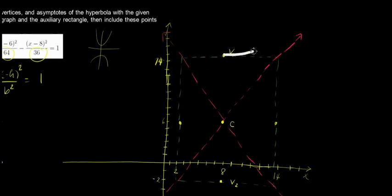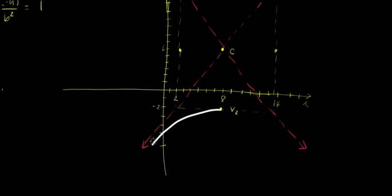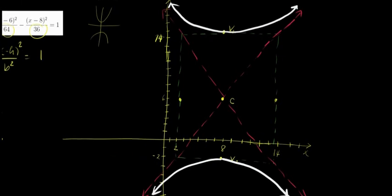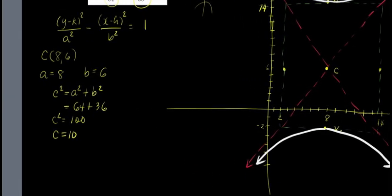Hindi pa natin dinradrawing yung hyperbola. So let's draw the hyperbola using the vertex and your asymptotes as the guides. So yung white lang - that's your hyperbola. Of course, hindi natin siya mag-graph kung hindi natin kukunin yung ibang parts.